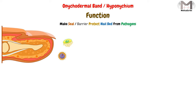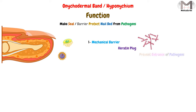This prevention happens because this band has two features. The first is the mechanical barrier, represented by the keratin block that prevents the entrance of pathogens.